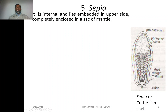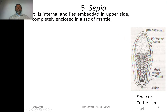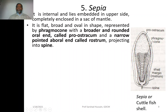The fifth individual, Sepia, has an internal shell. It lies embedded in the dorsal side, completely enclosed in a sac of the mantle. The mantle has secreted the shell, but it is present below the mantle rather than on the dorsal surface. This structure is called the phragmocon. It has a broader and rounded oral end called the proostracum — called oral end because the mouth is at this portion.